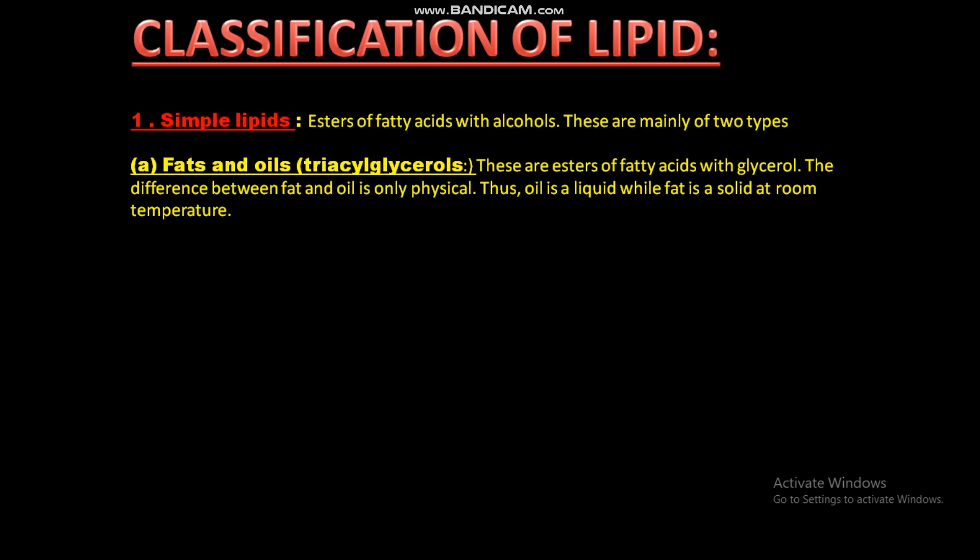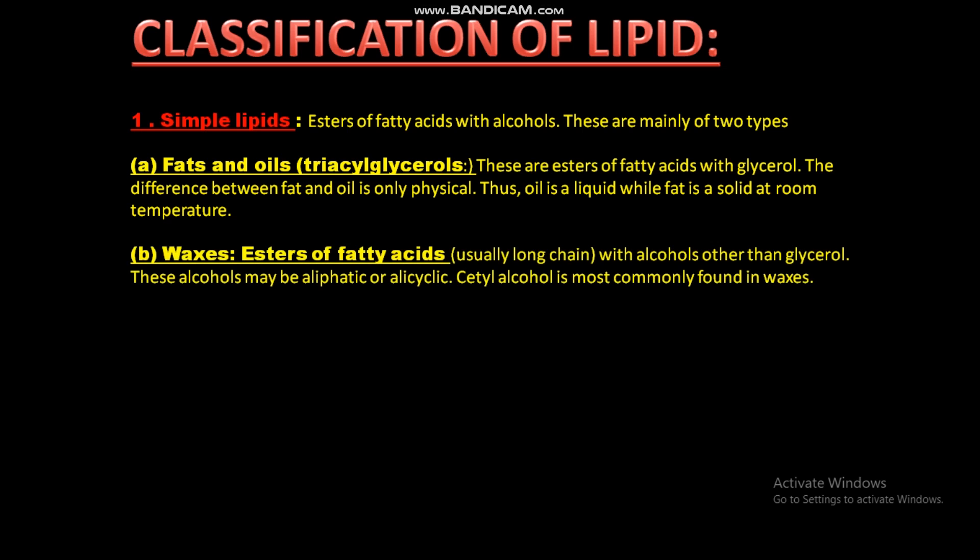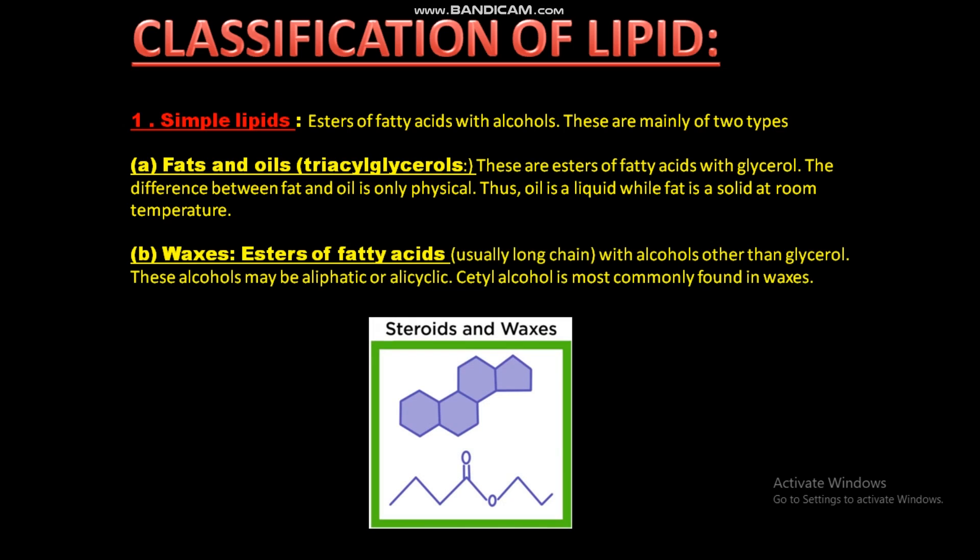The difference between fat and oil is only physical. Oil is a liquid while fat is a solid at room temperature. B. Waxes: esters of fatty acids, usually long chain, with alcohols other than glycerol. These alcohols may be aliphatic or alicyclic. Cetyl alcohol is most commonly found in waxes.